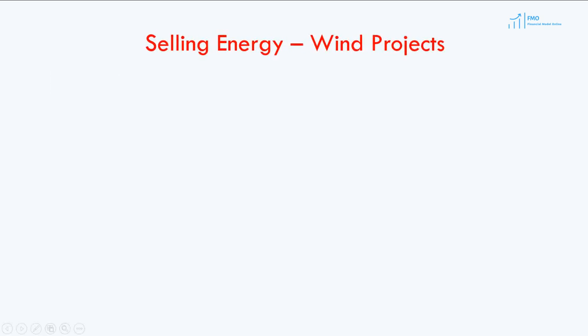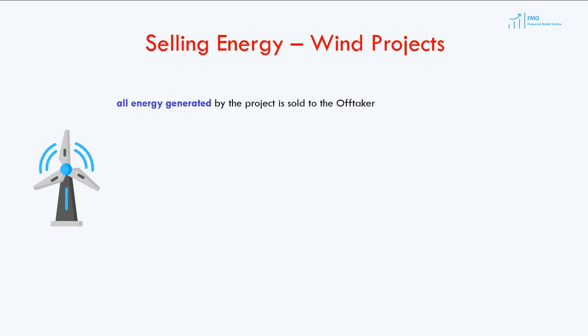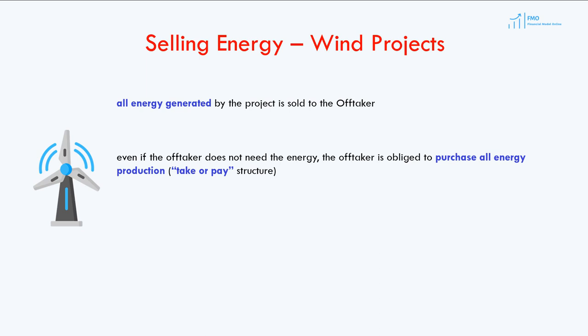The energy sales under the wind PPA and solar PPA are slightly different. Under the wind PPA, the off-taker has to purchase all of the energy produced by the wind project. Even if the off-taker does not need the energy, it has to pay the energy seller for the full amount of the energy produced. Therefore, the PPA for wind projects follows a take-or-pay structure — the off-taker has to take delivery and pay, or even if it does not take delivery, it still has to pay.